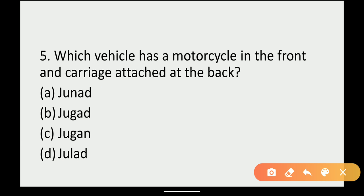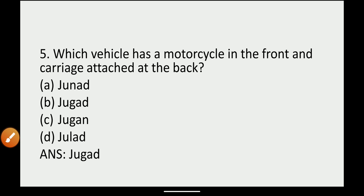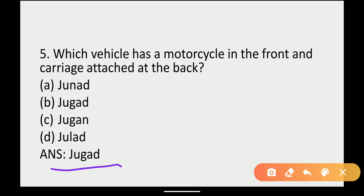Next: which vehicle has a motorcycle in the front and a carriage attached to the back? As we have seen in fill in the blanks and true or false, the vehicle with a motorcycle in front and a carriage at the back is Jugaad. Option A: Jugaanth. Option B: Jugaad. Option C: Jugaan. Option D: Julaad. The answer is Jugaad.